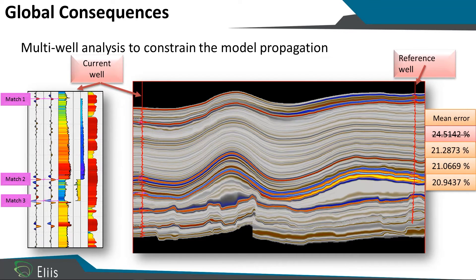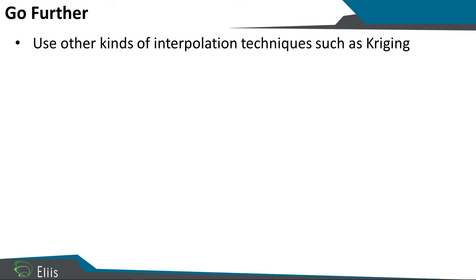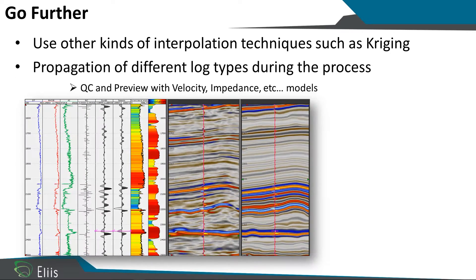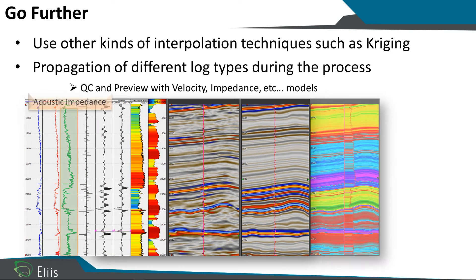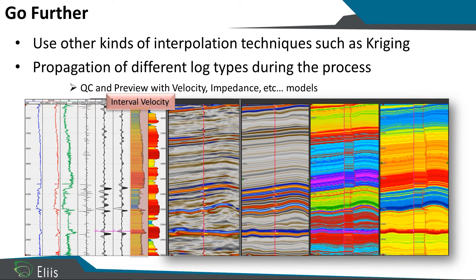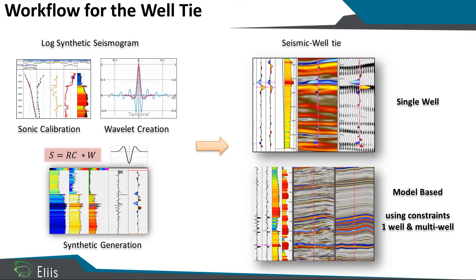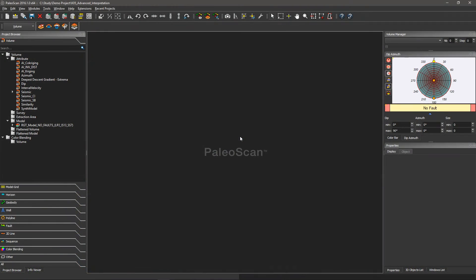Then I can go further and propagate other types of well logs, for example the acoustic impedance or the interval velocity using my 3D geomodel, to directly have some acoustic impedance or interval velocity model. During this presentation, first I will show you how to do some local seismic to well tie, and then I will show you the global seismic to well tie with the propagation of the synthetic using the 3D geomodel.